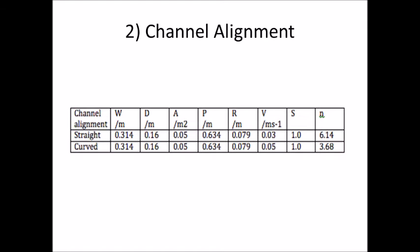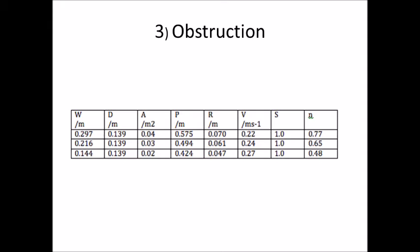For the second objective, channel alignment, we repeated the experiment using a straight channel and a curved channel. The velocity for the straight channel was lower than that of the curved channel, and when velocity increases, the n value decreases. For the last objective, obstruction, we used polystyrene to decrease the width of the channel, and from the results, when the width decreases, the n value also decreases.